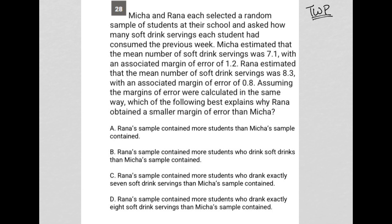The first sentence says: Misha and Rana each selected a random sample of students at their school and asked how many soft drink servings each student had consumed the previous week. That's the setup for their sample of students that they're polling — nothing to write down.